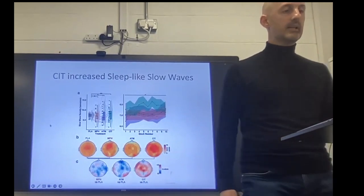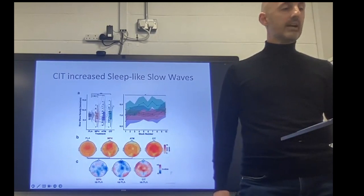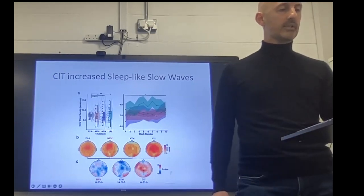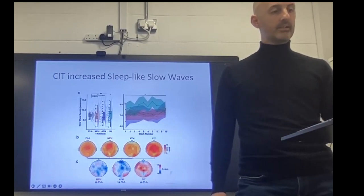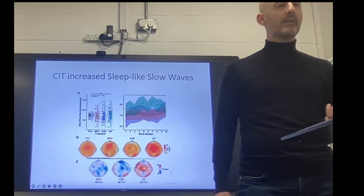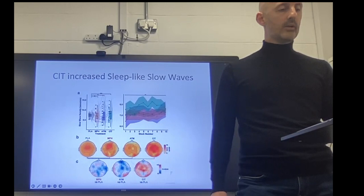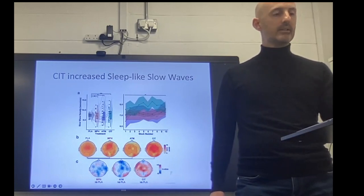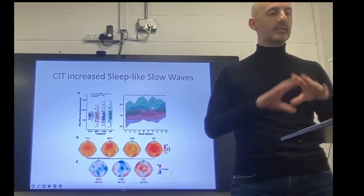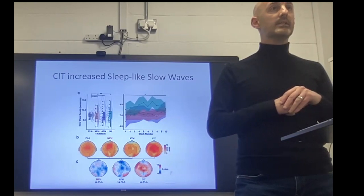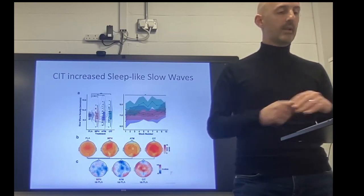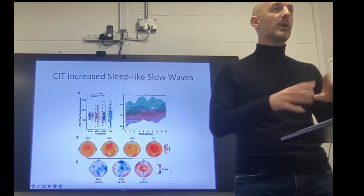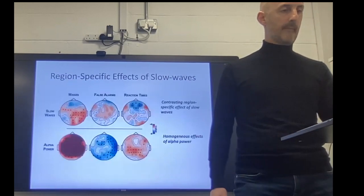That brings me to the sleep-like slow waves. Citalopram does have a selective effect on increasing these sleep-like slow waves. Looking at 10 blocks of the CTET, sleep-like slow waves clearly increased across the entire task, with a broad spread in the citalopram condition. By contrast, looking at clusters of electrodes for atomoxetine and methylphenidate, there's a reverse effect — a suppression of these slow waves under those drug conditions.